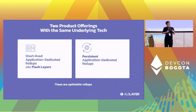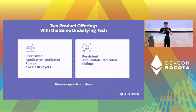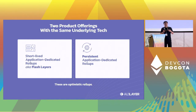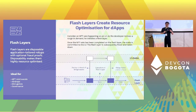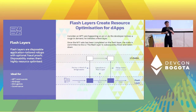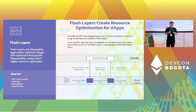There are two products we would like to provide. The first one is a short-lived application-dedicated rollup, which we call flash layers. The second is a persistent rollup solution quite similar to existing optimistic rollups. The idea to have flash layers is quite straightforward given the demands and requirements from applications.